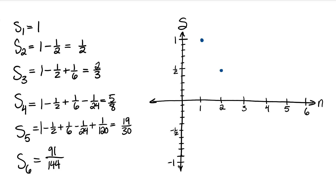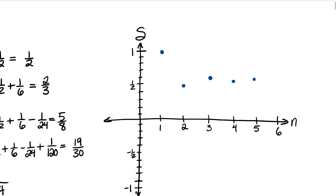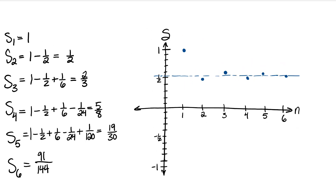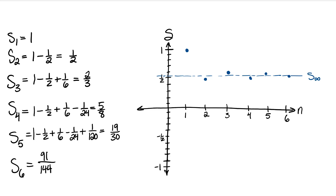When n equals 2, the second partial sum, I take 1 and subtract 1 half. When n equals 3, our partial sum is 2 thirds. When n equals 4, we get 5 over 8. At 5, we get 19 over 30, which is approximately 0.633, and S sub 6 is just a little bit lower. The difference, or the height, between each partial sum is equal to the next term — the difference between 1 and 1 half is 1 half, which was our second term, a sub 2. The difference between the second and third partial sum is a sub 3, then a sub 4, then a sub 5.